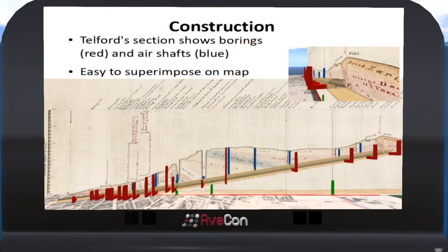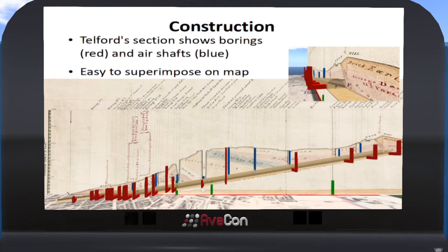The information we have about the railway, and particularly the construction of the tunnel, is relatively limited. What we do know is derived in significant part from this profile, which was only available to me earlier this year. This is an implementation of a section by the very famous engineer Thomas Telford, who compiled a report on the railway. It shows the location of the borings, shown in red, and the air shafts, shown in blue. Edge Hill is at the right and Wapping down on the left.